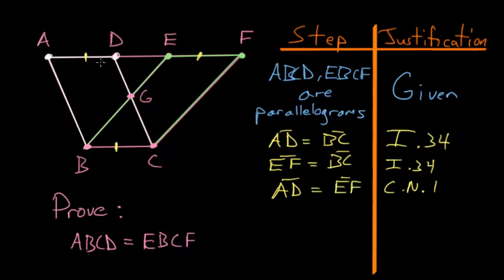and then these two sides, AD and EF, if we just add the side DE to each of them, using common notion number 2, then we'll have that AE is equal to DF. So, AE equals DF